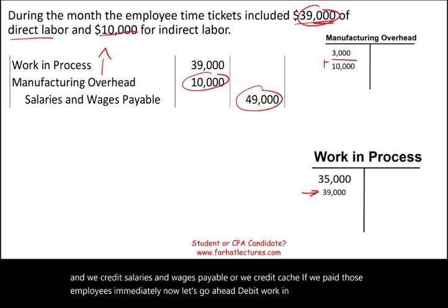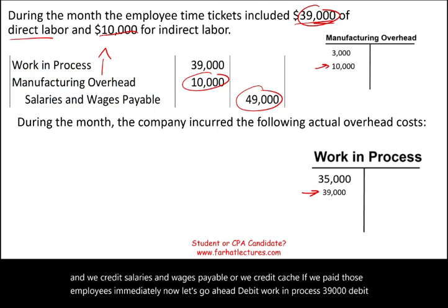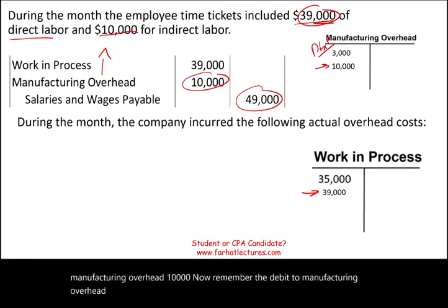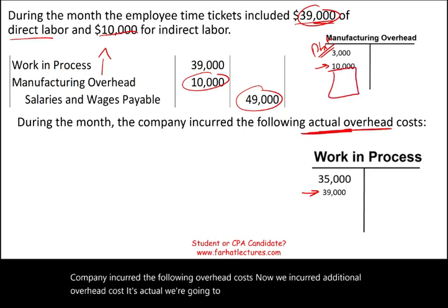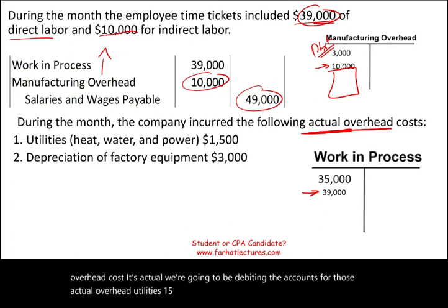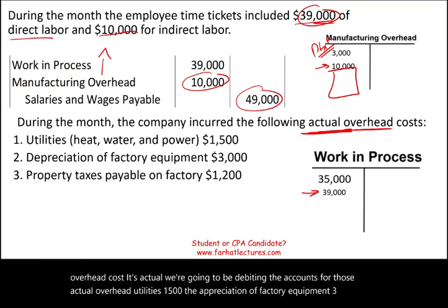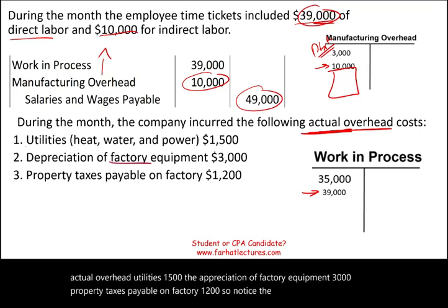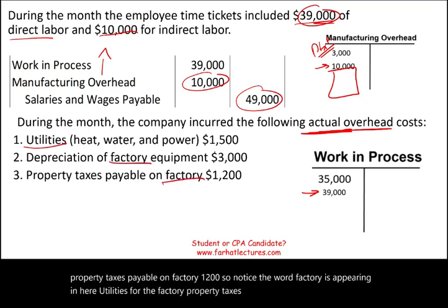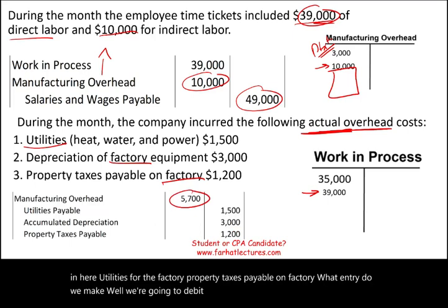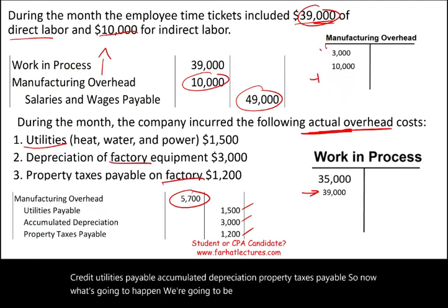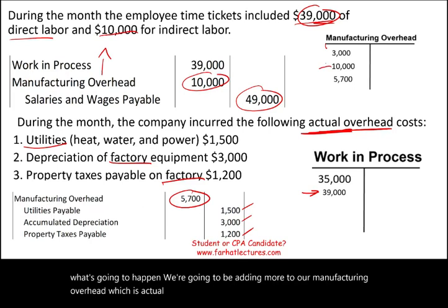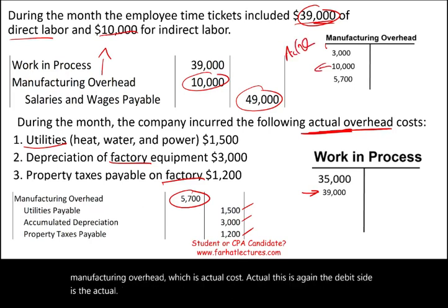The debit to manufacturing overhead represents actual costs. During the month, the company incurred additional overhead costs: utilities $1,500, depreciation of factory equipment $3,000, and property taxes payable on factory $1,200. We debit manufacturing overhead for the total and credit utilities payable, accumulated depreciation, and property taxes payable. Note the word 'factory' appears — these are factory-related costs, so they are manufacturing overhead. The debit side reflects actual costs.